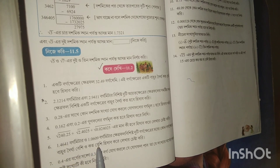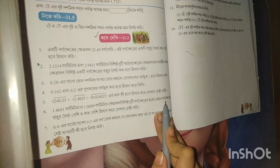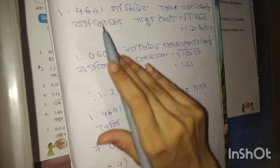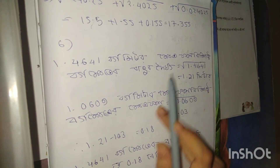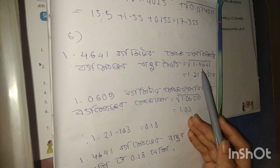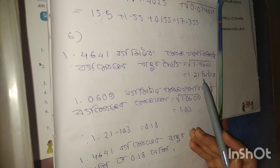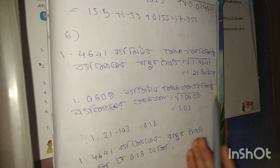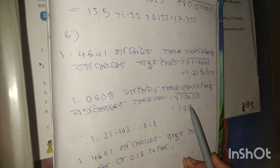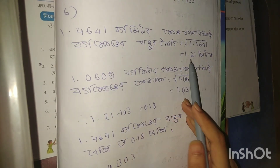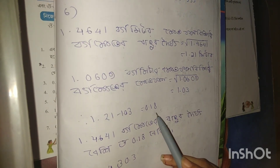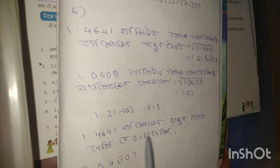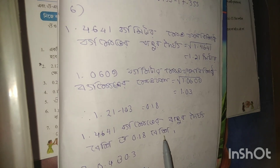1.4641 bm and 1.0609 bm. So, 1.4641 bm is 1.0609 bm. bm is 1.03, bm is 1.0301 bm. So, bm is 0.18 bm. bm is 1.4641, and bm is 0.818 bm.